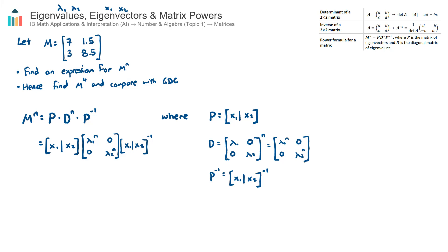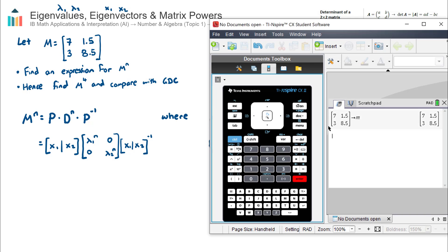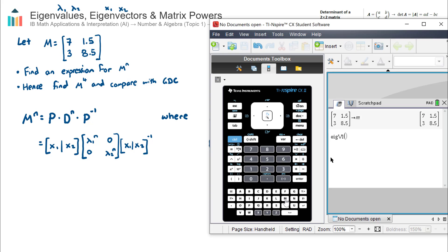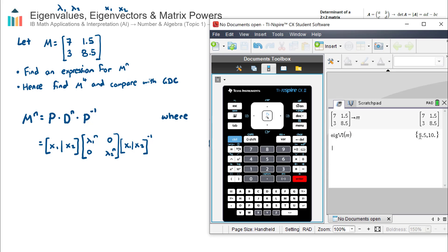I can find the eigenvalues either by hand or by calculator — I'll show the calculator method first. I've input matrix M and stored it as M in the calculator; you need to store it as a letter to compute eigenvalues. I go into the calculator index, select EIGVL, hit enter, pull through matrix M, hit enter, and there are my two eigenvalues.